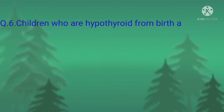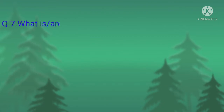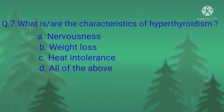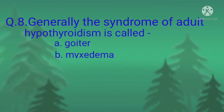Question number six: children who are hypothyroid from birth are called — option A, cretins; option B, thyrotoxicosis; option C, myxedema; option D, keratinemia. The correct option is option D, all of the above. Question number eight: generally the syndrome of adult hypothyroidism is called — options are presented.